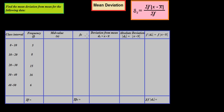The formula for mean deviation from mean is: δx̄ = summation of f times mod of (x minus x̄), divided by summation of f. This is the formula we will use.